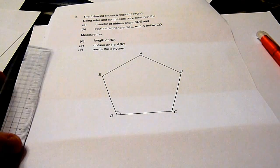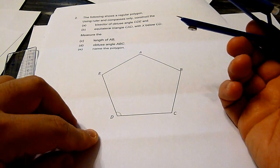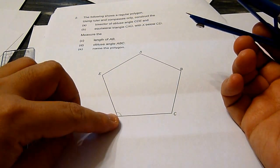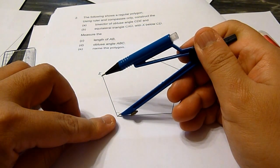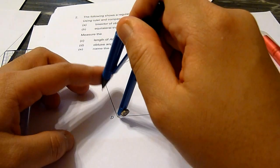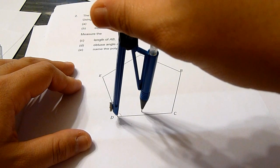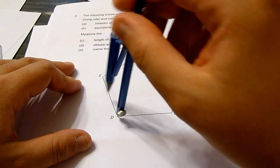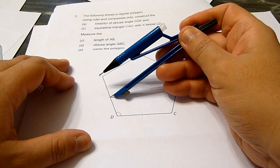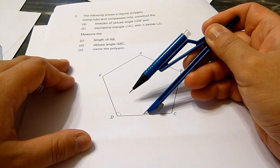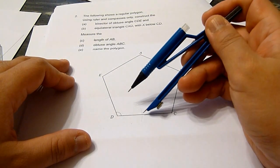First, we shall draw the angle bisector. Mark the two arms of the angle such that this point and this point are equal distance to the angle.